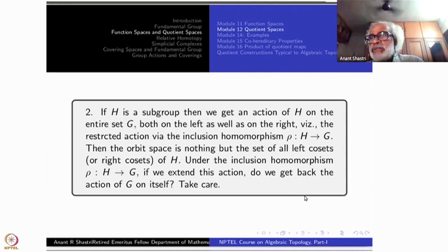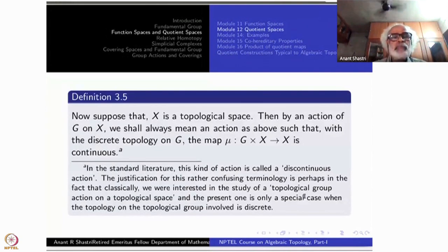This is called restricted action through the homomorphism rho from H to G of the action number one. The orbit space here are nothing but the left cosets or the right cosets according to which action you have taken. This is what you study in group theory. Under the inclusion homomorphism rho from H to G. Now if we extend, first you had G cross G, G acting on G itself, you restricted it to an action of H. Same rho if you extend it, you will not get back G. You will get something larger.